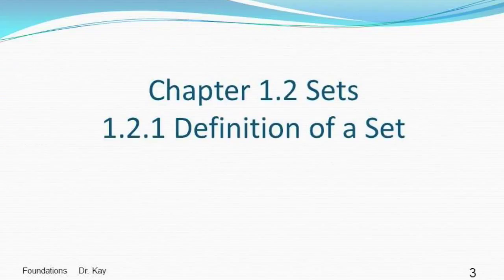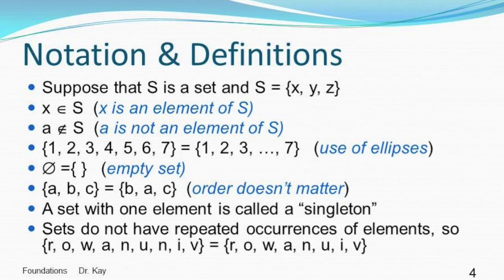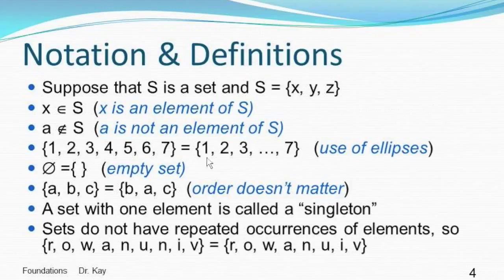Section 1.2.1 has the definition of a set. I'm going to assume you already know what a set is, but let's suppose that S is the set {x, y, z}. We use this element notation to say x is an element of S. I'll use a line through that element symbol to say 'a is not an element of S.' We can also use ellipses to indicate things missing in the set following the pattern.